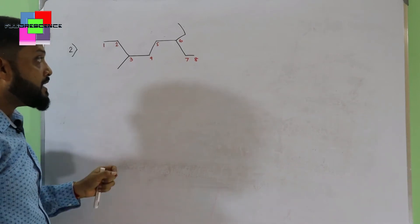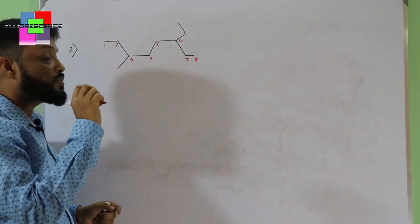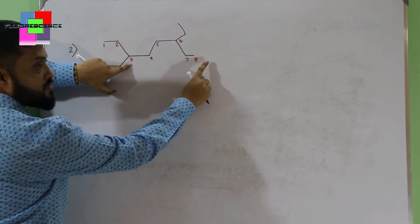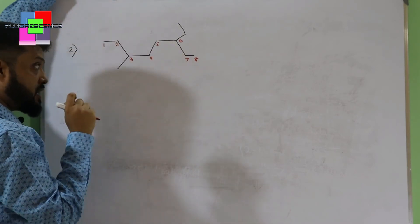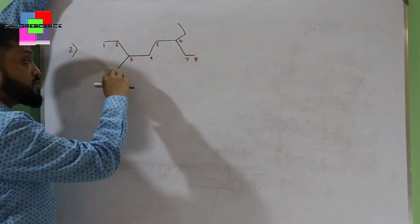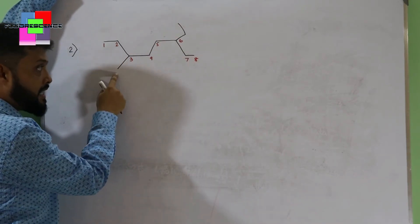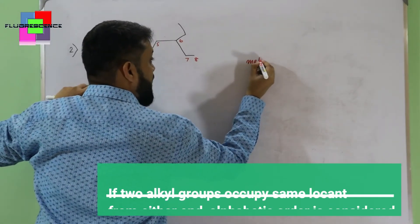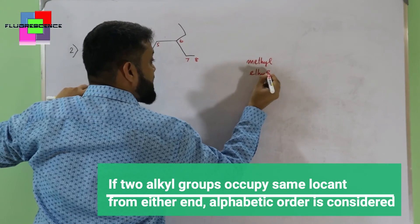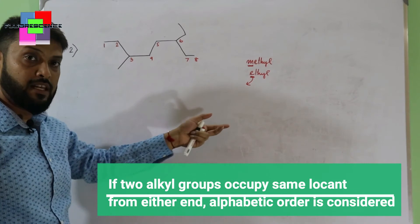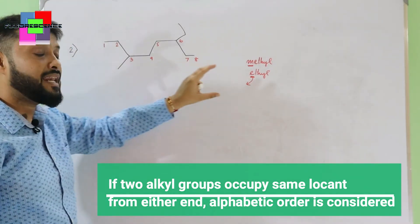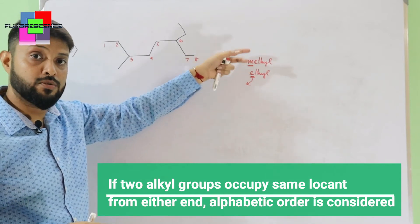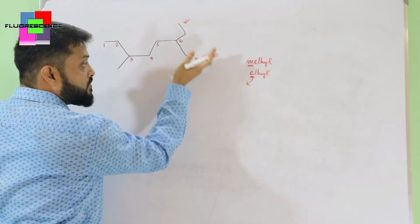When two alkyl groups have identical locants from both sides, priority is given according to alphabetical order. Methyl starts with 'M' and ethyl starts with 'E' — since E comes before M alphabetically, we give priority to ethyl and start our numbering from the right side where ethyl receives the lower number. Starting from the right: ethyl is at position 3, and methyl is at position 6. The root name is 8 carbons — octane.